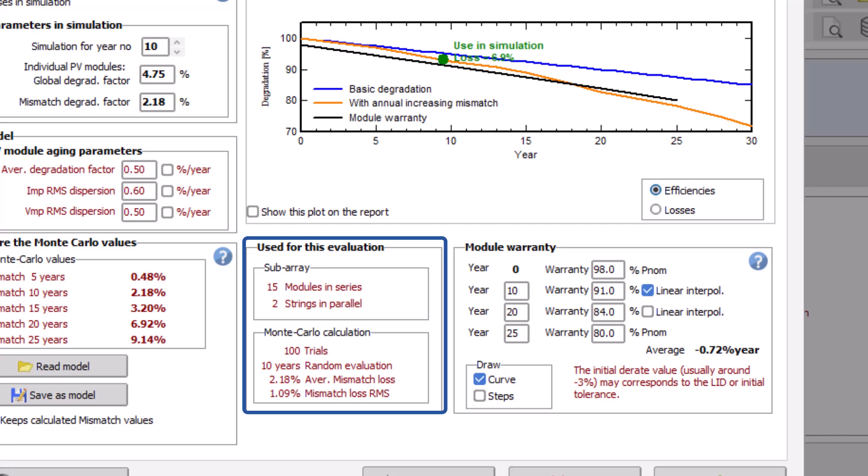For the Monte Carlo calculation, 100 trials were done. Random evaluation is executed over 10 years since we defined the simulation year at 10. The information on the average mismatch loss is the same as the one in parameters in simulation.